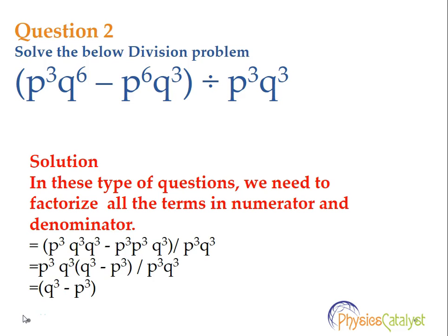Now we need to look for the common terms from both terms in the numerator. We can easily see that p cube and q cube are the common terms. Taking those terms out, we get p cube q cube into q cube minus p cube, divided by p cube q cube.